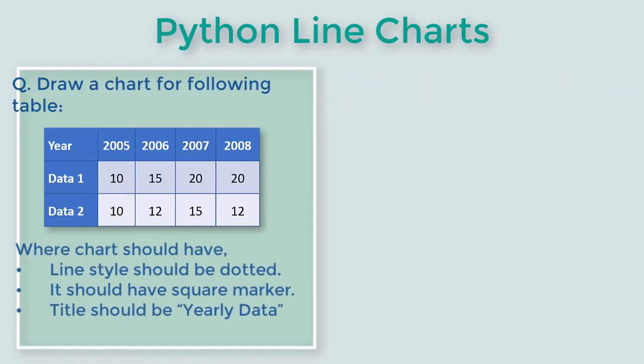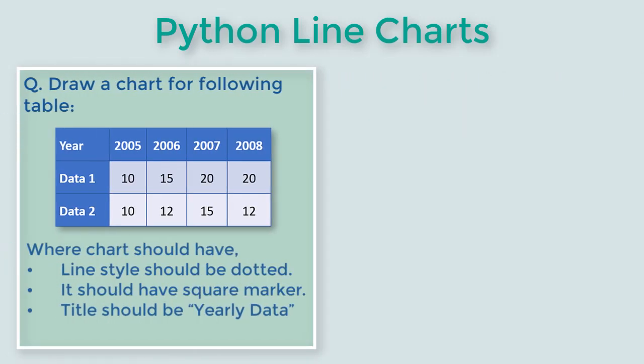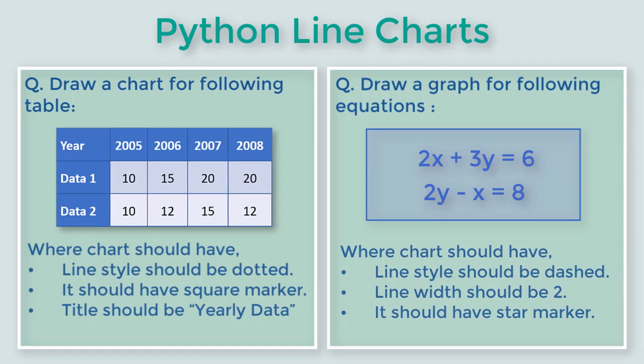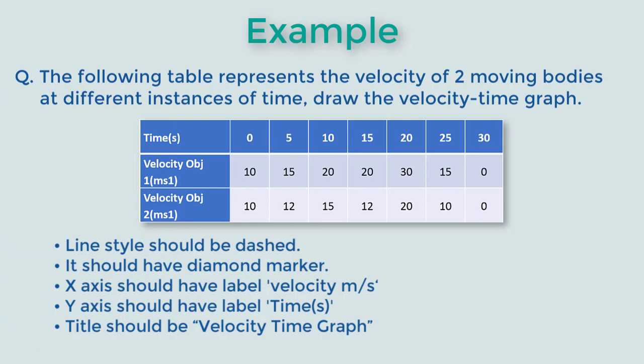The questions we are asked on line charts are either a table with data points which we are asked to plot or an equation which we need to plot. Let's start with a simple question. Here we have data of velocity of two objects and we need to plot a line chart.